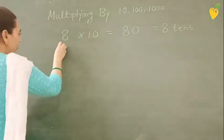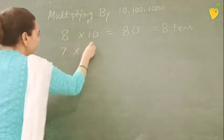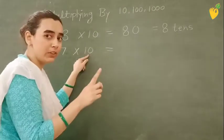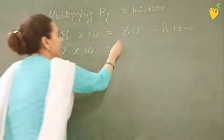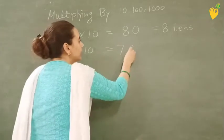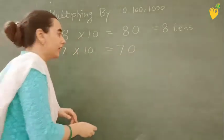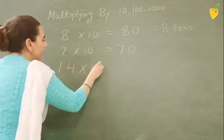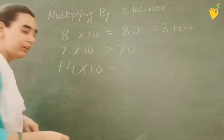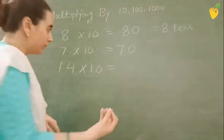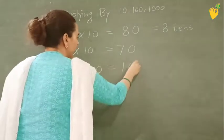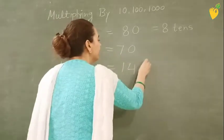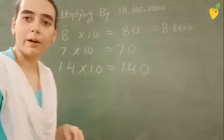See, whenever we are multiplying any number from 10, 100, 1000, what we do? We write, suppose here it is 10. In 10, how many zeros are there? 1 zero is there only, right? So we write 1 zero after 8. That is 80. Again, suppose we have to multiply 7 by 10. Again here, after 1, only 1 zero is there. So we will write 7 and 1 zero, it will be 70. Suppose we have to multiply 14 by 10. So again we will do the same thing. We will write 14 and 0. How many zeros is there? 1. So it will be 140. So it was about 10.